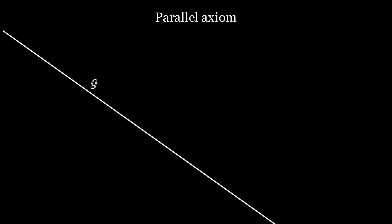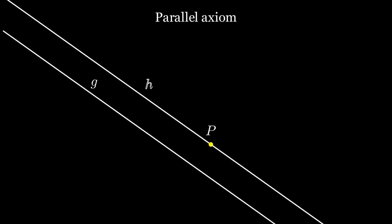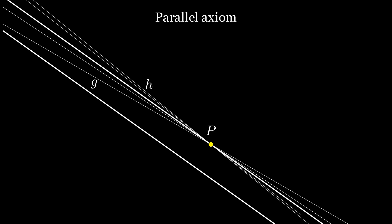Axiomatically, hyperbolic space differs from Euclidean space in that the parallel axiom does not hold. The parallel axiom states that for every straight line G and every point P that does not lie on G, there is exactly one straight line H that runs through P and is parallel to G — meaning they do not intersect. This property does not hold in hyperbolic space. Here, for every line G and point P, there are several, even infinitely many, straight lines through P which are parallel to G.